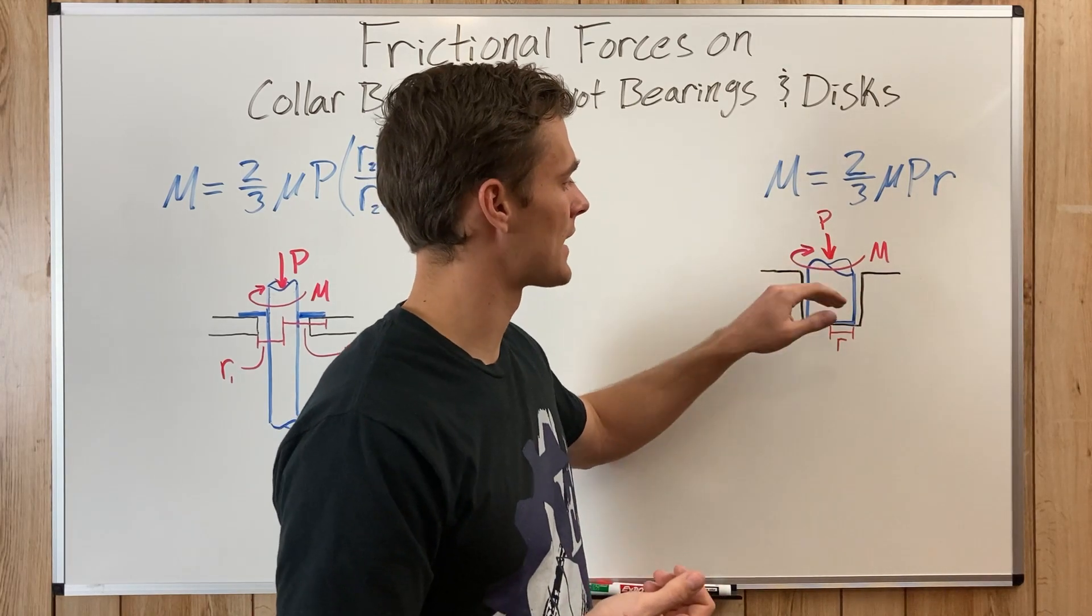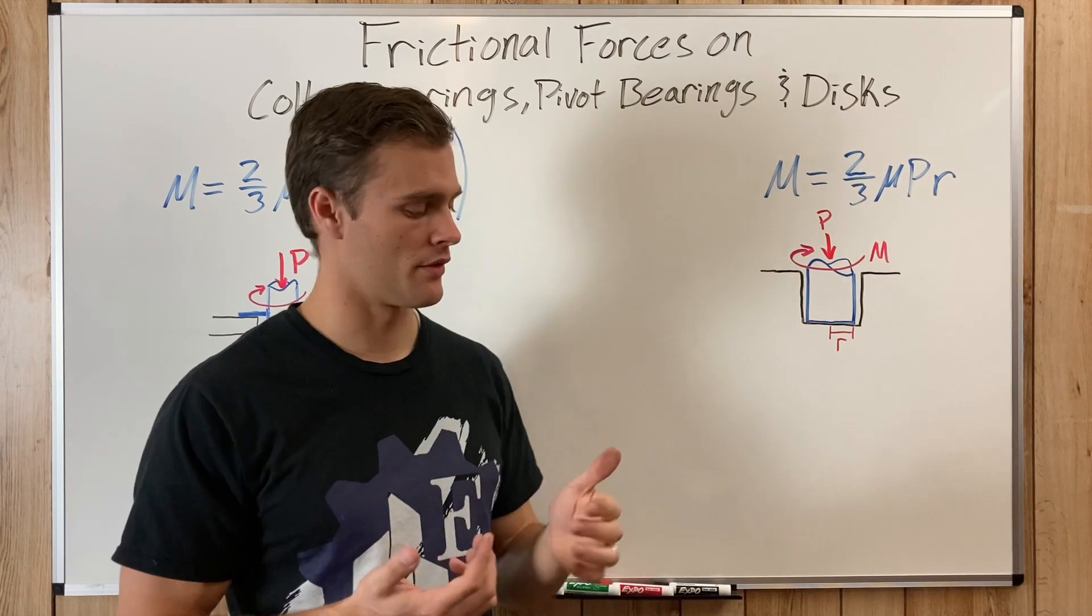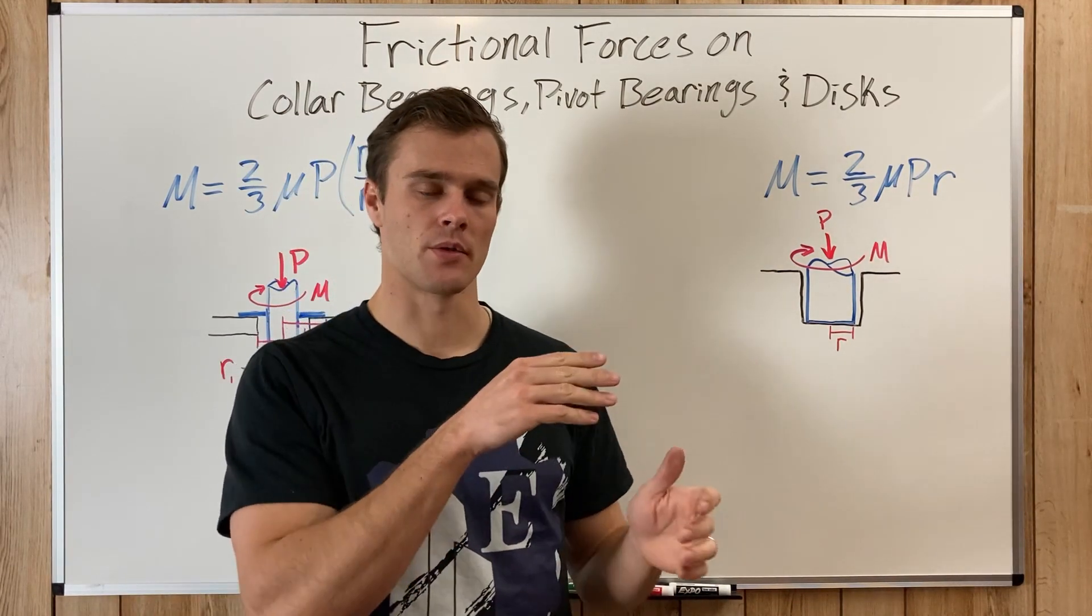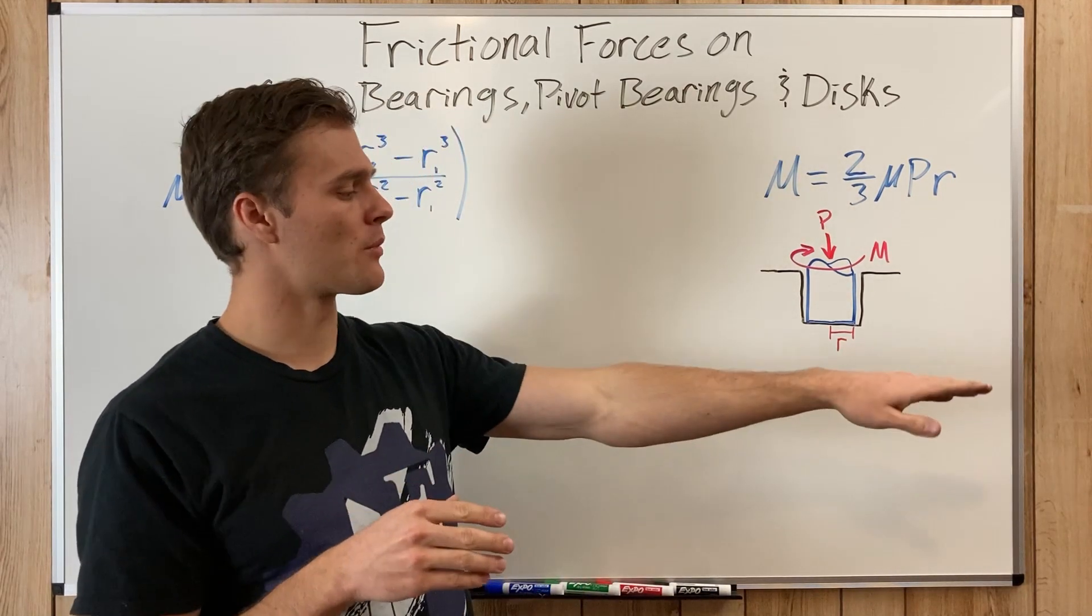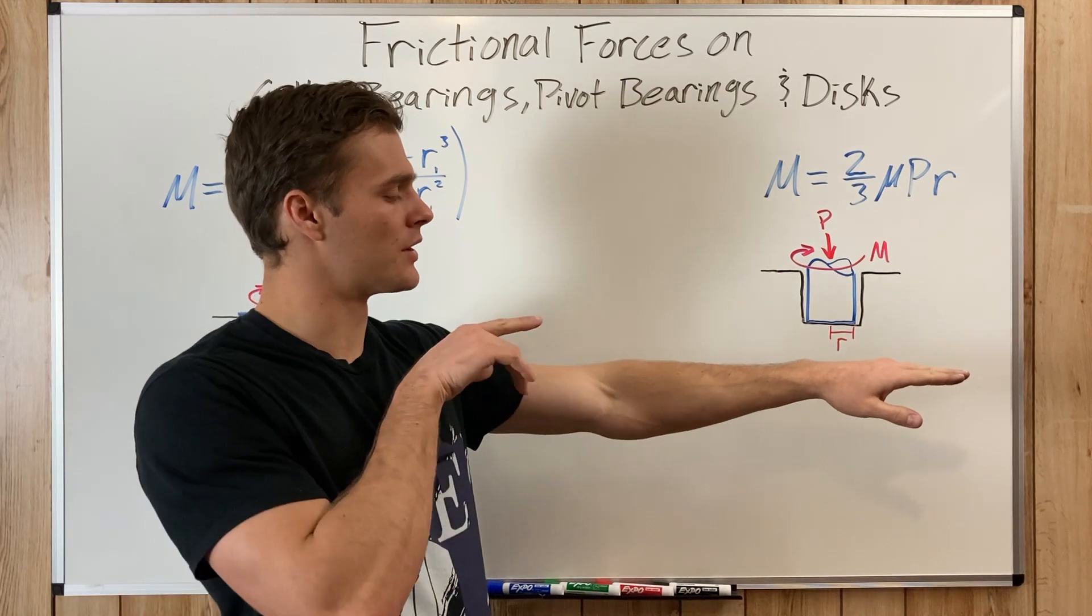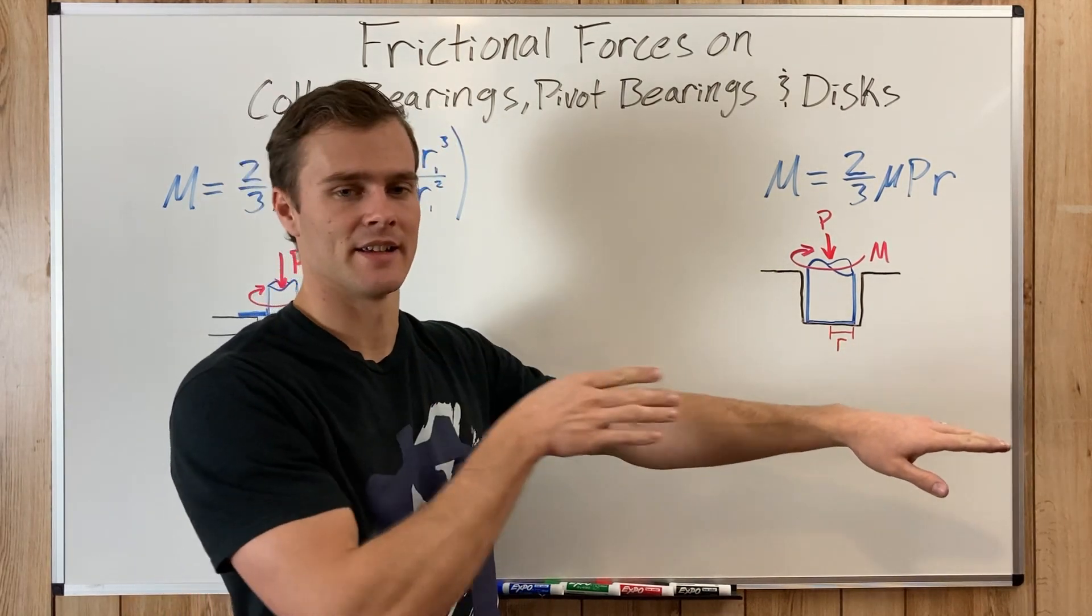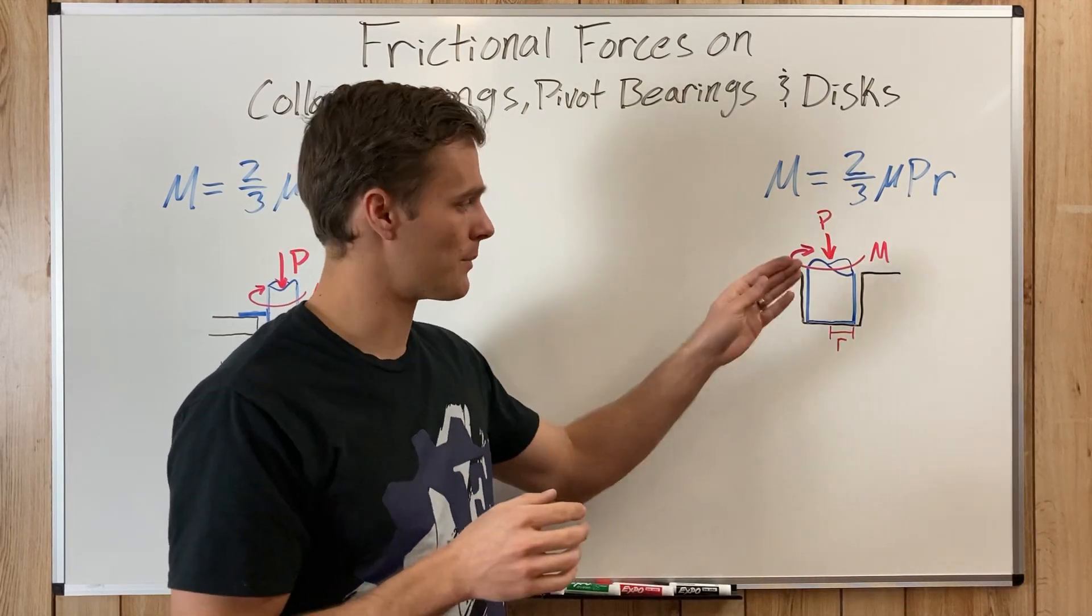P is the axial load on the rod. And an axial load, if you don't know, is the force that is in line with the rod pushing it either one way or the other. And so say if my arm was the rod, it could only push my arm this way or this way, and it's just in line with my arm. So that's an axial load, and that's what P is.